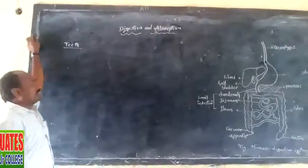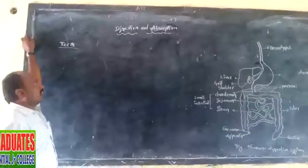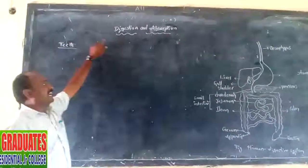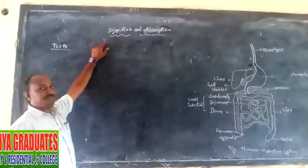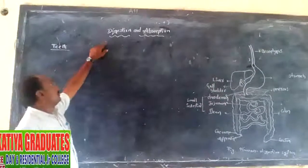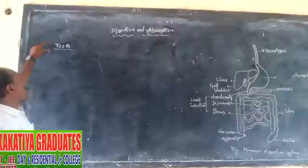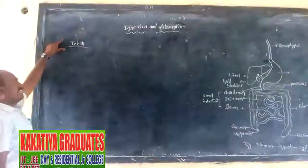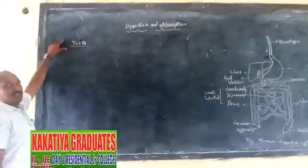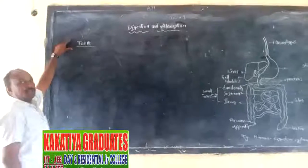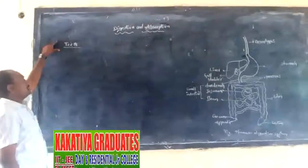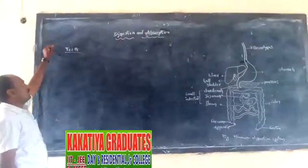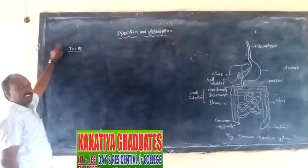We are continuing the last topic, Direction and Absorption. Here the topic is teeth. Yesterday I was discussing that the bulk part of the teeth is composed of the dentine.